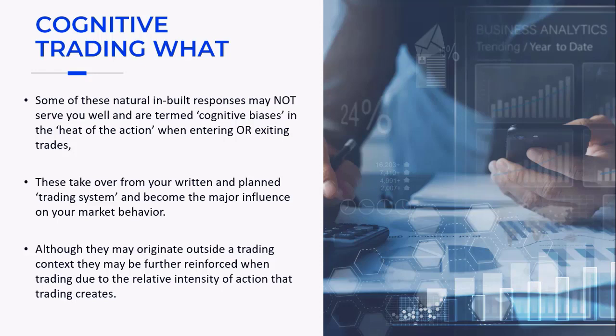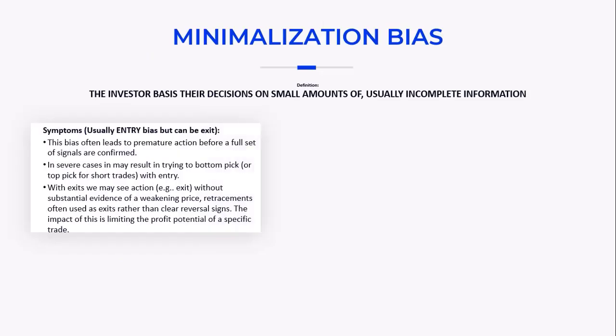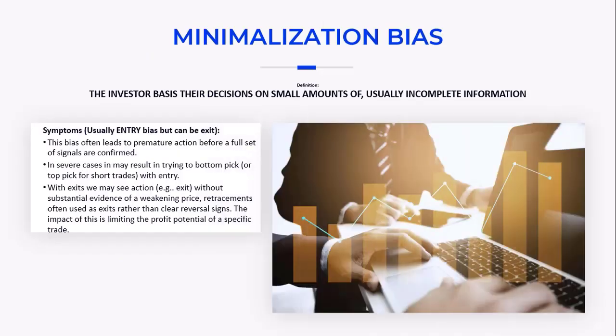One of these is Minimalization bias. This is most commonly seen when we see a sharp move on a chart, get very excited about it, and just jump in on the basis of one price move within a candle. The problem is that with Minimalization bias, investors are basing their decisions on small amounts of usually incomplete information — most often seen at entry, but can apply to exit as well — and this bias often leads to premature action before a full set of signals are confirmed.